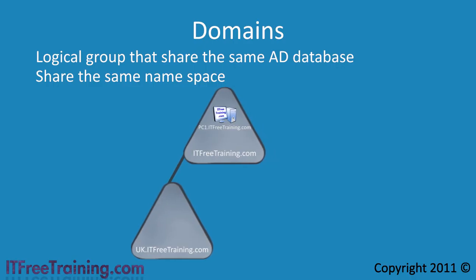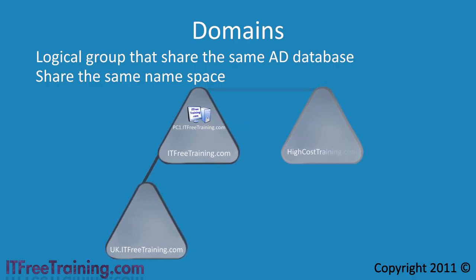If ITFreeTraining were to purchase another company called High Cost Training, this company could be linked to the existing domains. Each of the companies has their own Active Directory database and all have their own settings. From an administrative point of view, they are all separate domains with their own database. If you were to make a change to Group Policy in one domain, it will not affect the other domains. As you will see later in this course, you can share resources and user accounts between domains even though they are separate.